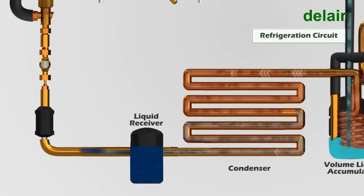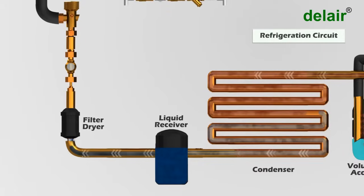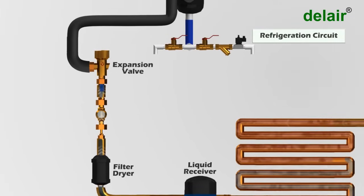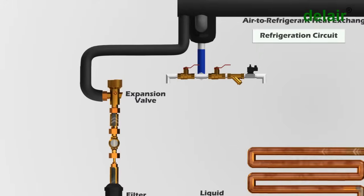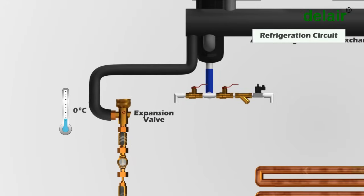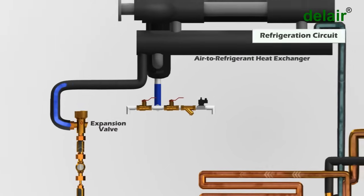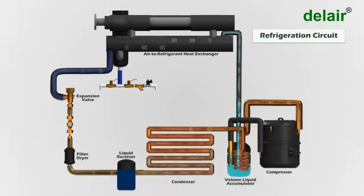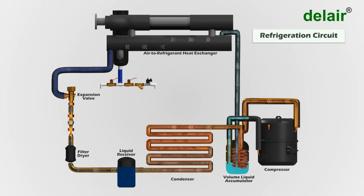The liquid then travels through a filter where impurities are absorbed. The liquid then passes through an expansion valve which reduces the pressure of the liquid, leading to a reduction in its temperature down to zero degrees Celsius. This enters into the air-to-refrigerant heat exchanger and the heat from the hot compressed air is absorbed by the cold refrigerant. This refrigerant is then sucked by the compressor and the cycle starts over again.